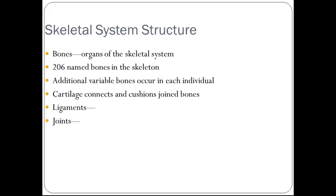The skeletal system structure. The skeletal system consists of bones as the major organs. There are 206 named bones in the skeleton. There are additional variable bones that occur in each individual. Cartilage connects and provides cushion for joints of the bones. We have ligaments, which are bands of fibrous tissue that hold bones together. Joints are connections between bones that make movements possible.